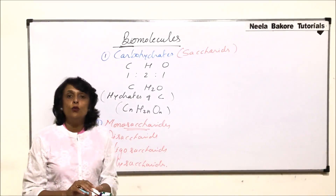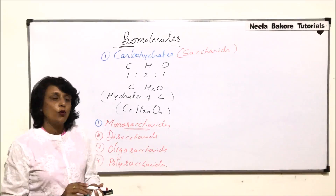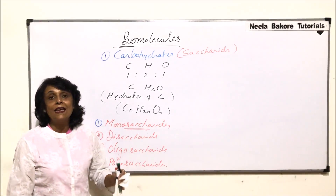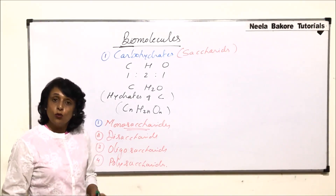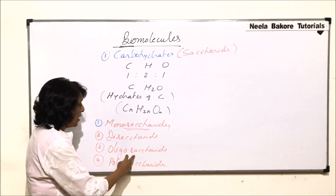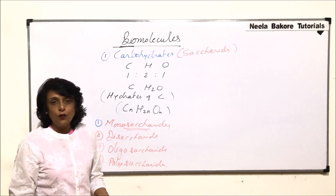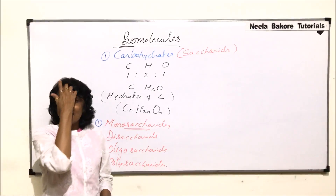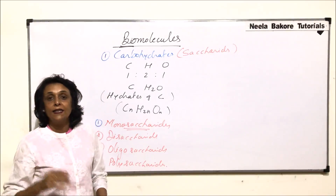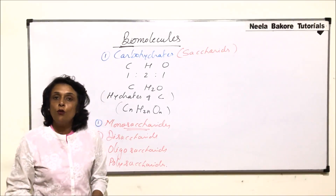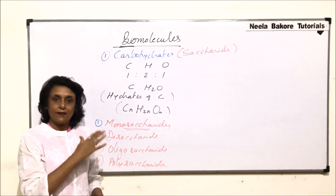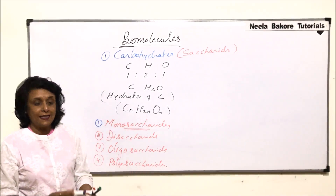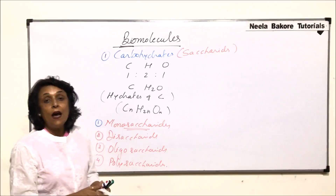Monosaccharides include glucose, fructose, and galactose. Disaccharides include lactose and sucrose. Oligosaccharides include raffinose. Polysaccharides are complex carbohydrates such as cellulose, chitin, and glycogen. We have to discuss all of these in detail, starting now with monosaccharides.